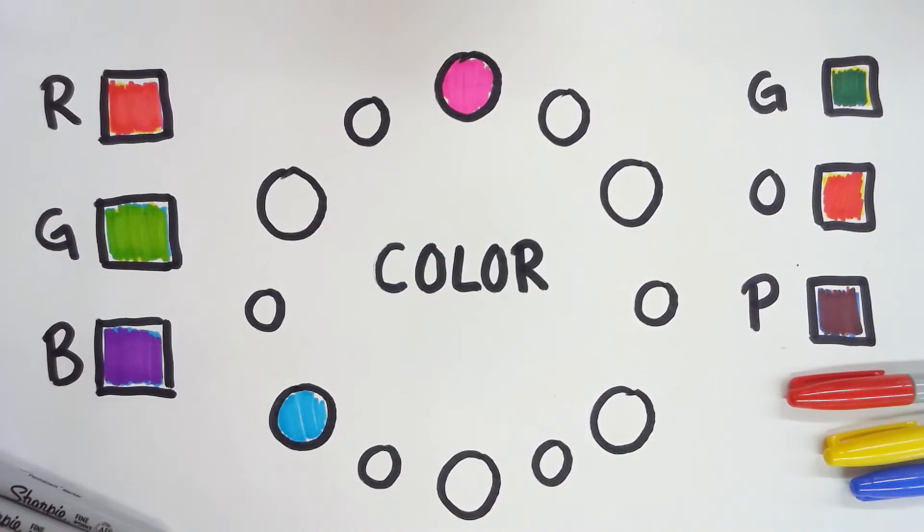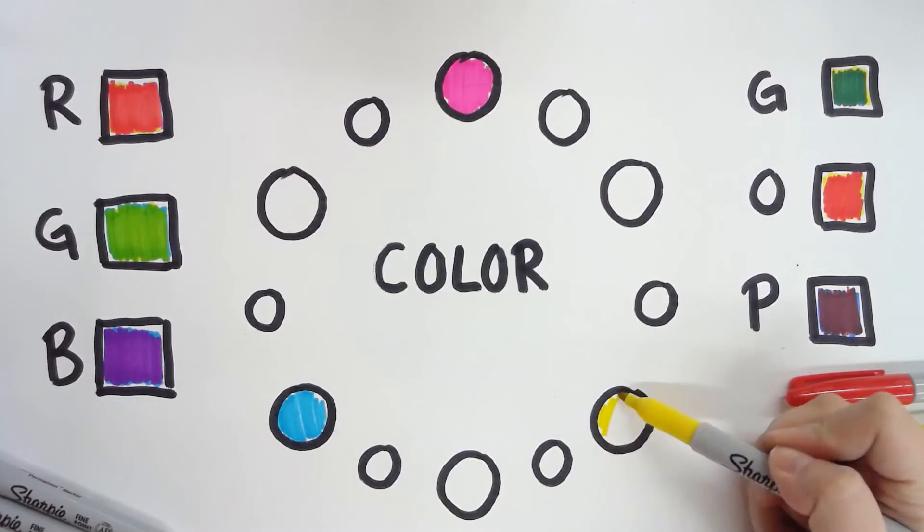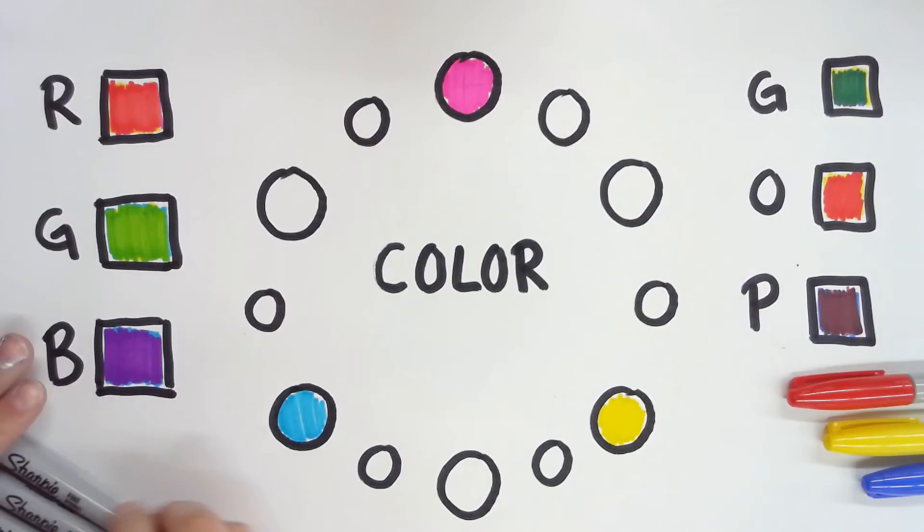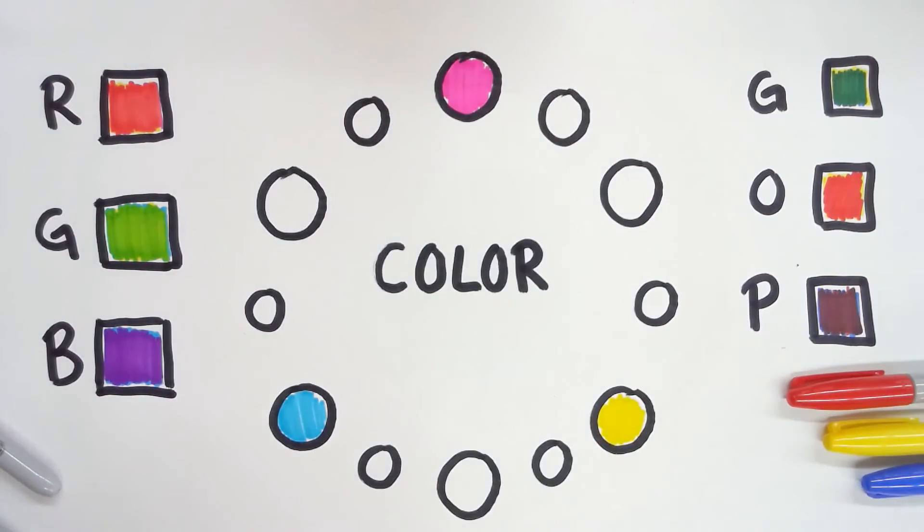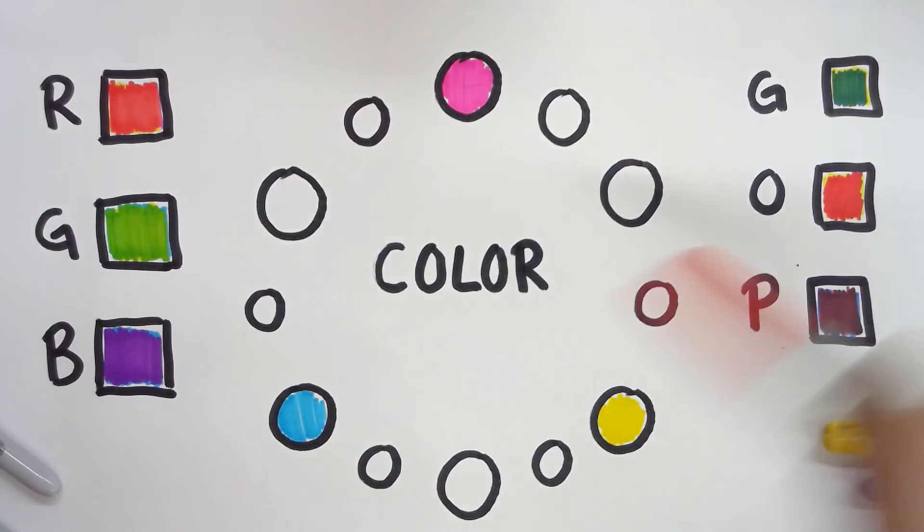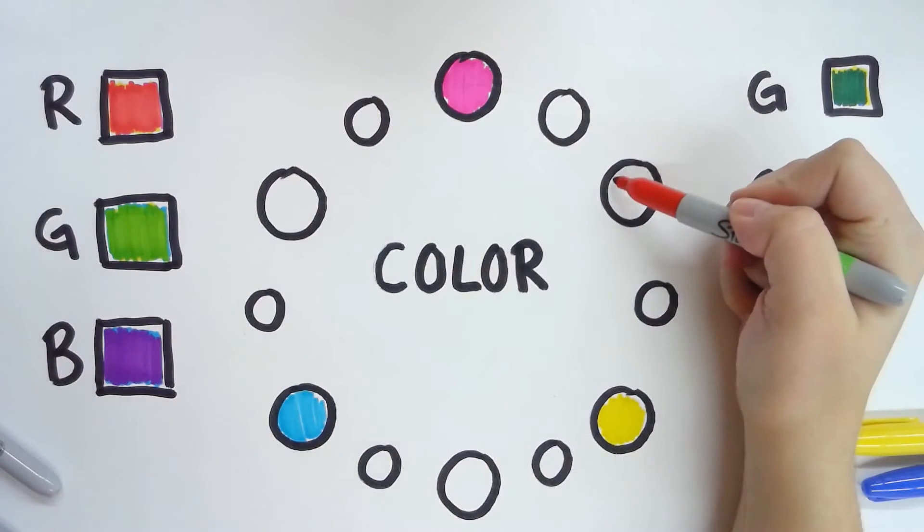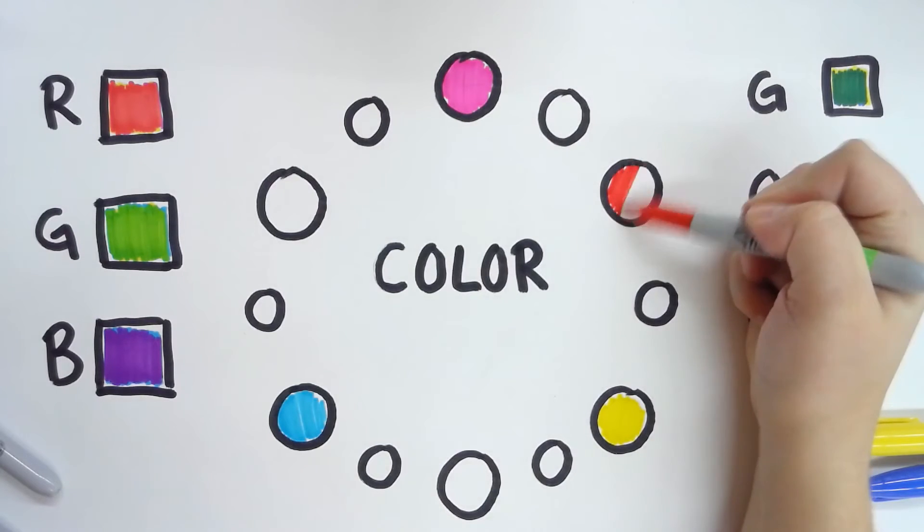And then I'm going to get my yellow here. And notice how they all have three spaces in between each of these colors. So those are my primary colors. When these two mix together, I get an orange. So let's get that orange in there. Oh, red. Man almost ruined it, and Sharpies can't be erased.